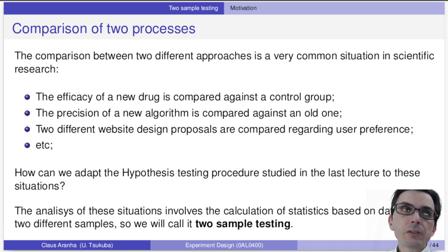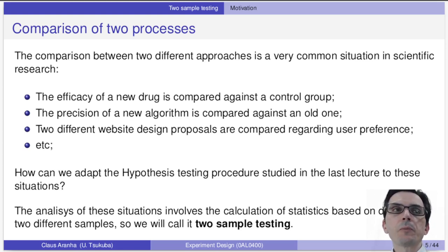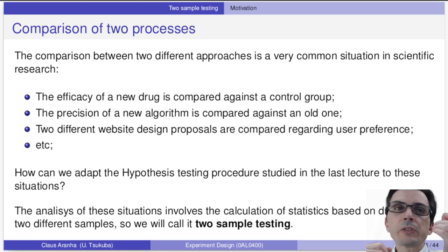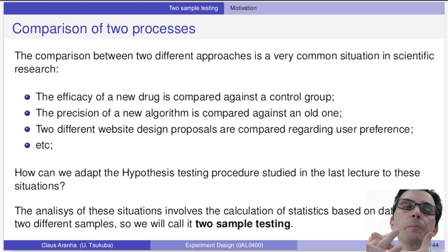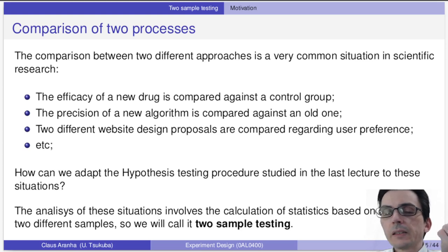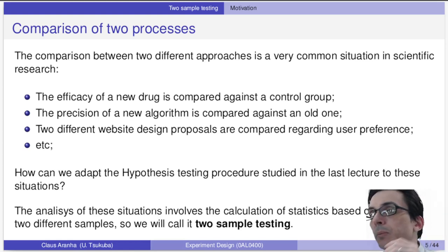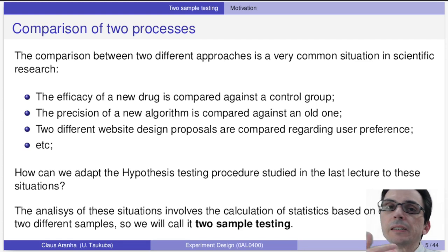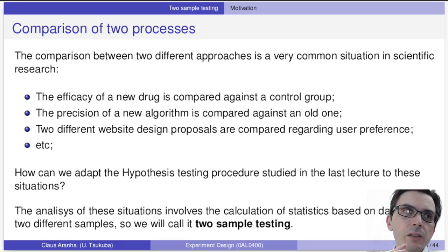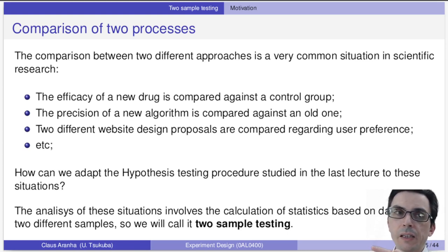This happens very often — the comparison of two processes, especially in computer science or in scientific experience in general. Sometimes we want to compare the efficacy of a drug against a placebo, or we want to compare the precision of one algorithm against an old one, or we want to compare different website design proposals. In many cases we have two treatments that we want to compare. We want to know what is the mean of option A, what is the mean of option B, and we want to know if the mean of option A is bigger than the mean of option B. So how do we adapt the hypothesis testing procedure from last class to this situation?